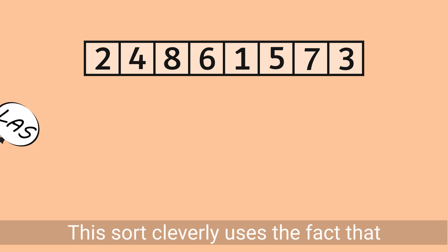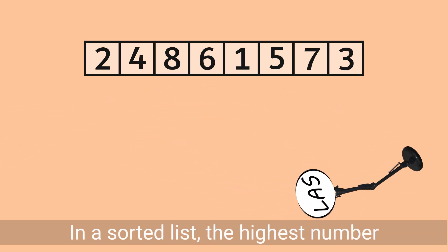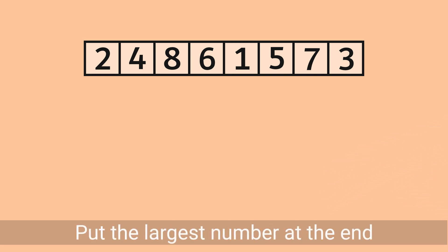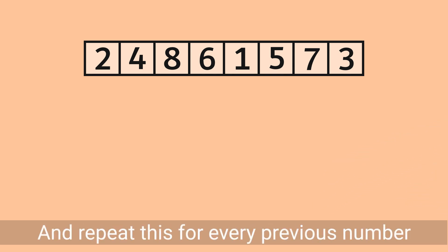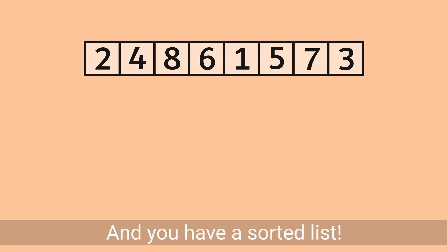This sort cleverly uses the fact that in a sorted list, the highest number is at the end of the list. Put the largest number at the end, and repeat this for every previous number, and you have a sorted list.